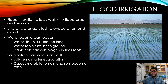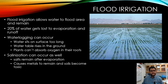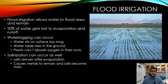Flood irrigation is very cheap and simple, but about 20% or more gets lost to evaporation and runoff. It can also lead to waterlogging, where water rises up around the roots. While that might sound beneficial, the problem is that plant roots are not able to absorb oxygen — they need aerated soil, not flooded soil — and you essentially end up drowning your plants.